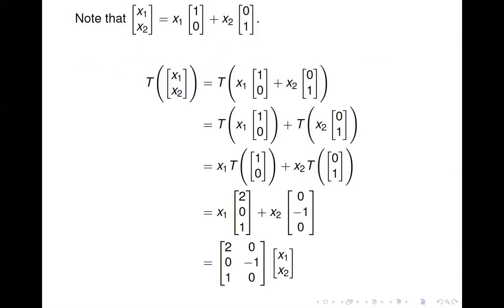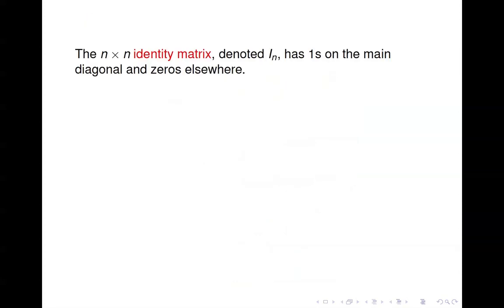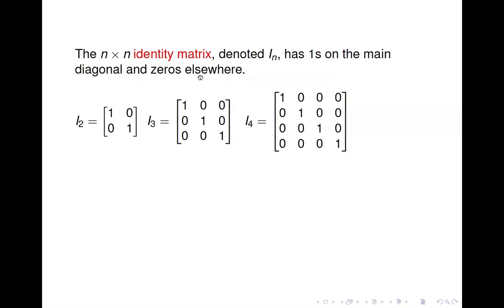Those columns — (1,0) and (0,1) — are special vectors. To talk about that, let's first define the identity matrix. The identity matrix is an n×n square matrix, written as I_n. It has 1s on the main diagonal — the (1,1), (2,2), (3,3), (4,4) positions — and 0s everywhere else. For example, I2 is 2×2 with 1s on the diagonal; I3 is 3×3 with 1s on the diagonal and 0s everywhere else; and here's I4.